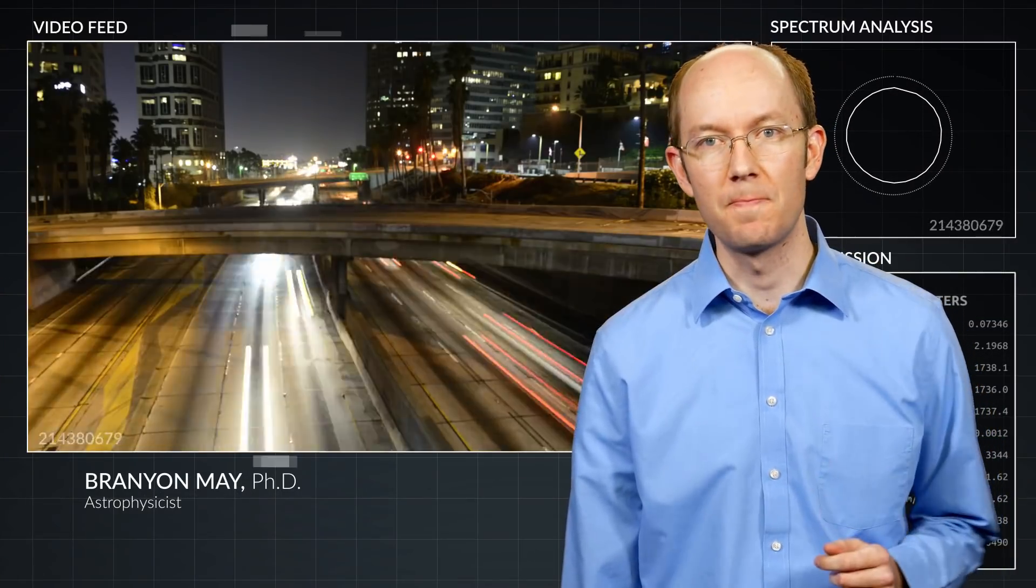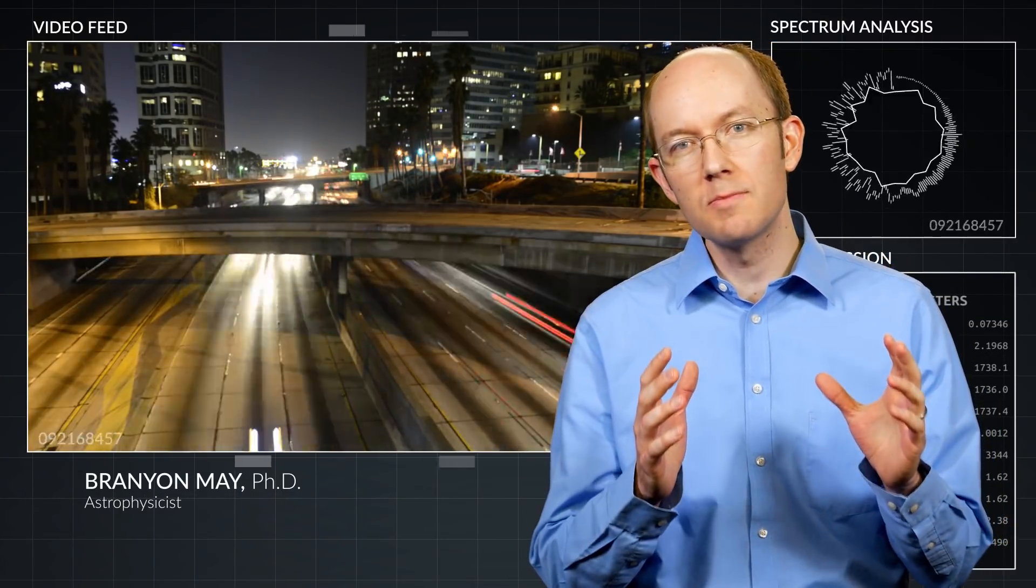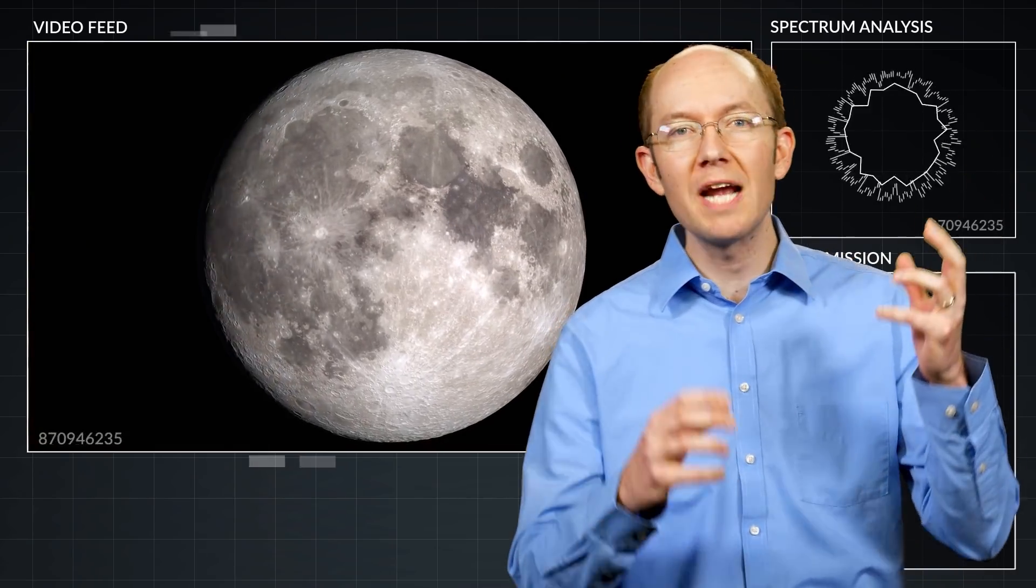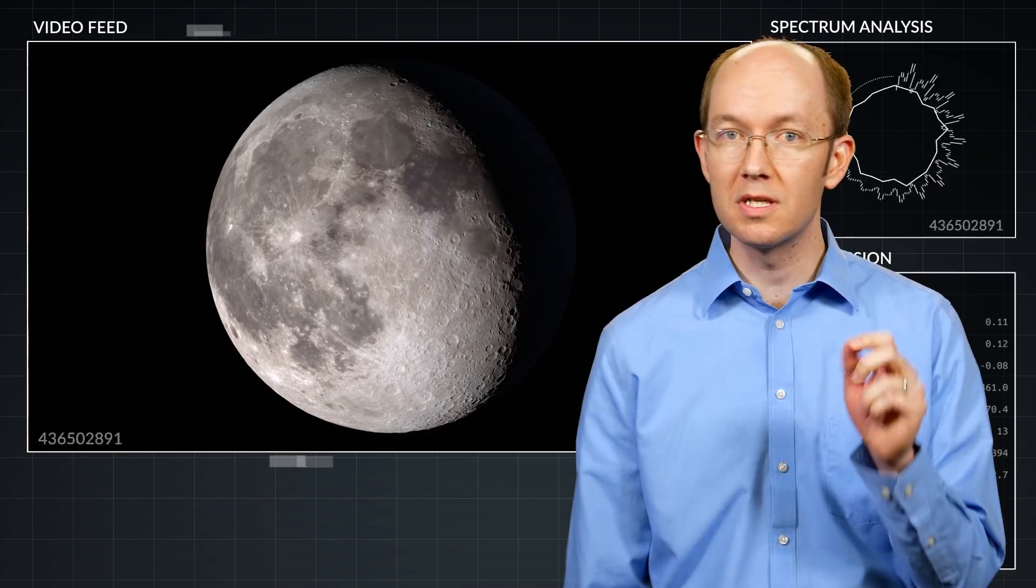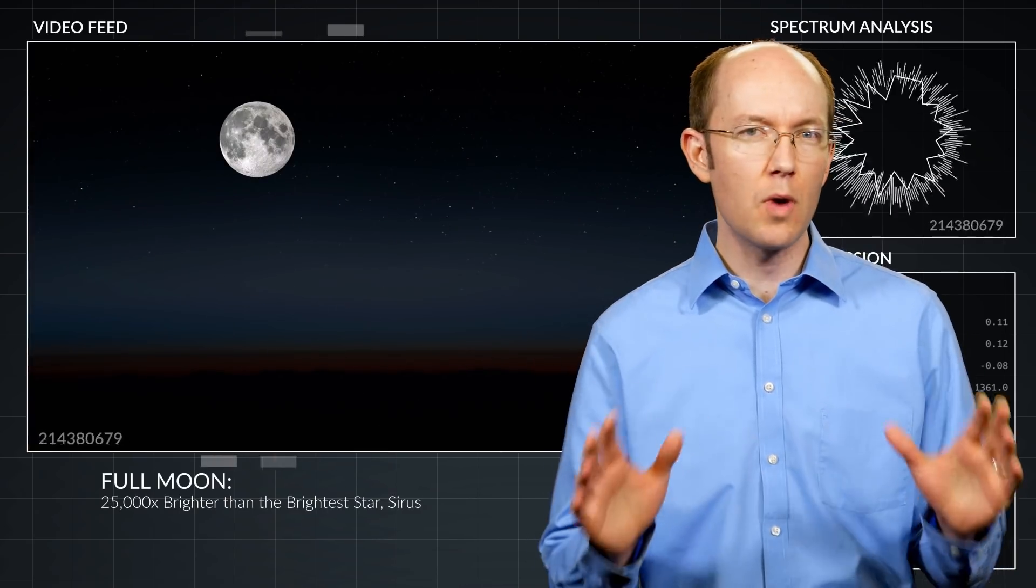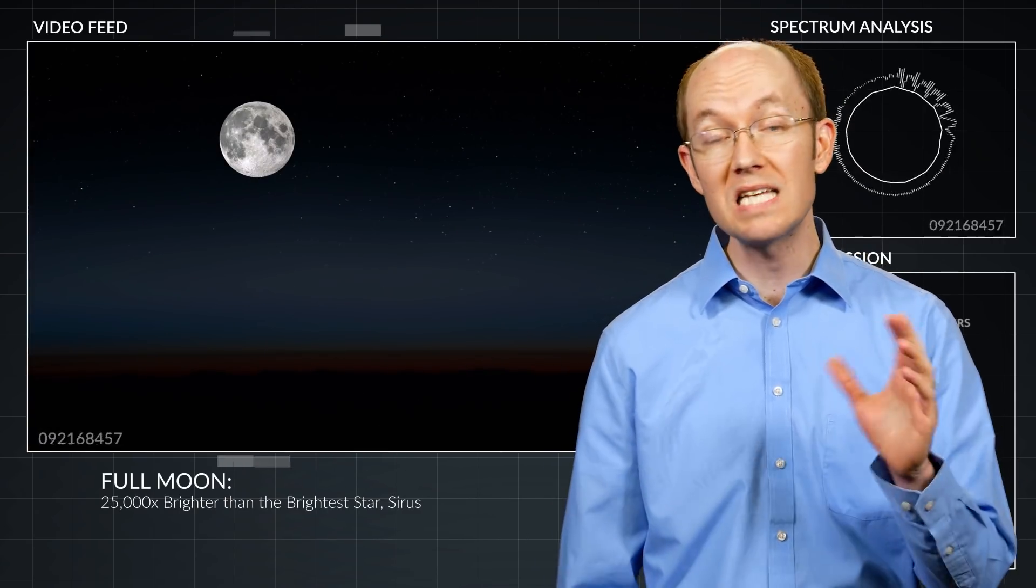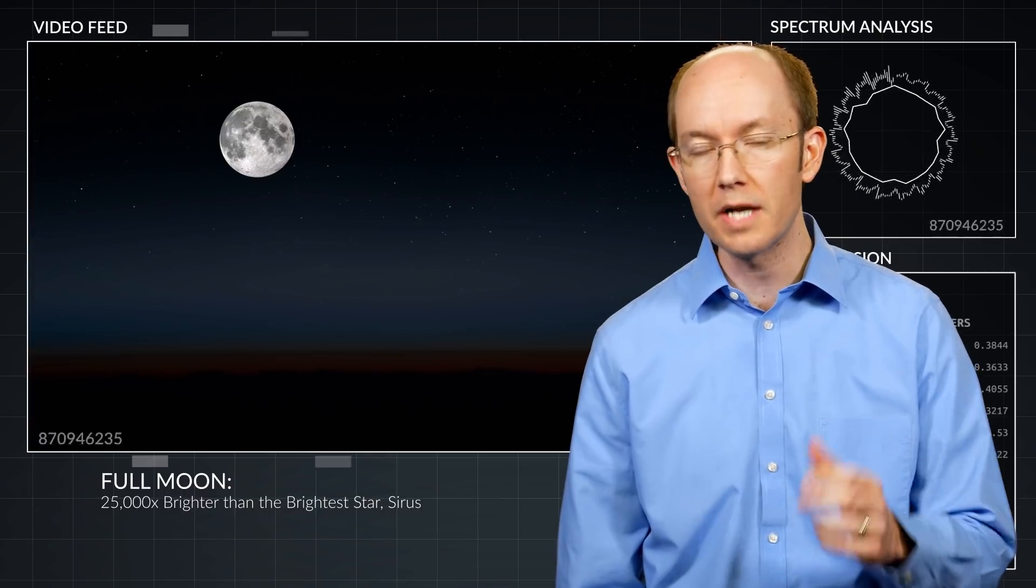When we think about nighttime, one of the first images that comes to mind is the large full moon shining bright in the darkness. The moon is Earth's nightlight and by far the brightest object in the night sky, many times brighter than even the brightest stars.